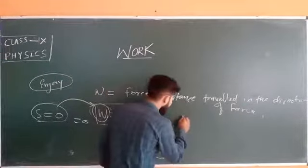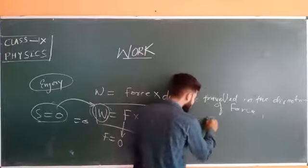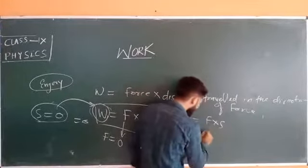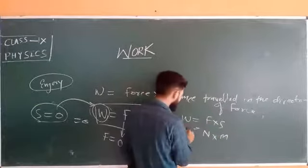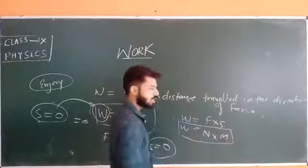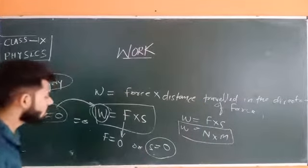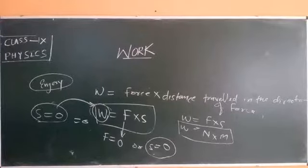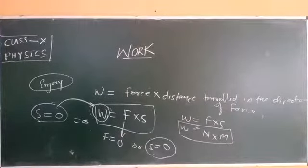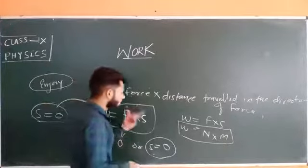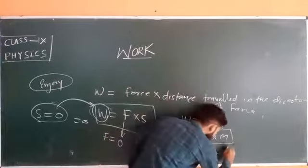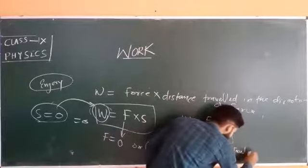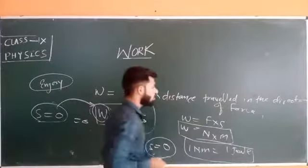Now let's talk about the unit of work. Since W = F × s, and the unit of force is Newton and the unit of distance is meter, the unit of work is Newton meter. One Newton meter can also be written as Joule. So the SI unit of work is Joule — either Newton meter, and one Newton meter equals one Joule.